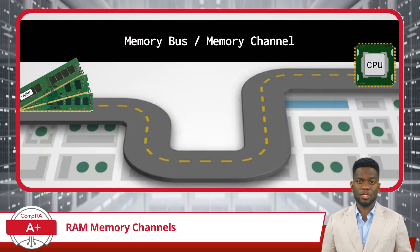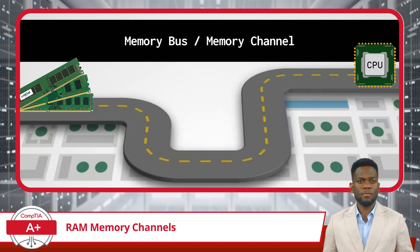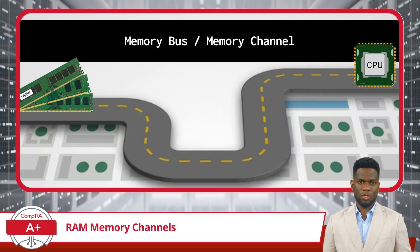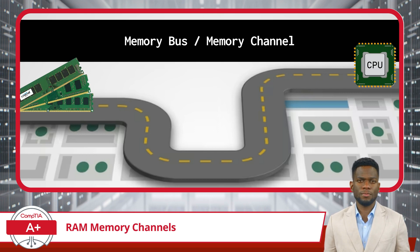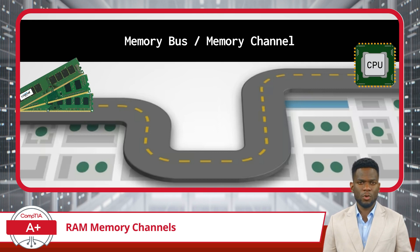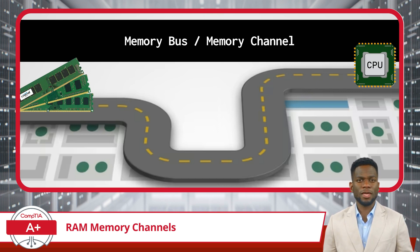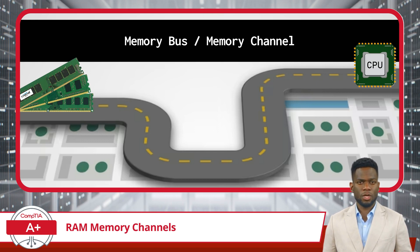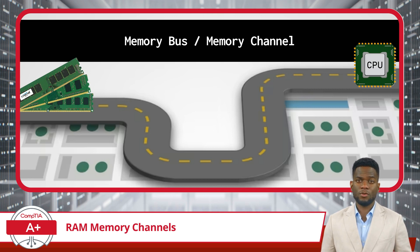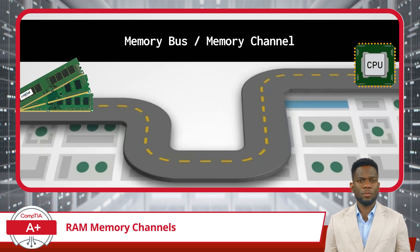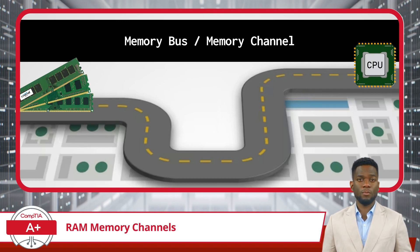Next, let's discuss the memory bus or memory channel between the CPU and the memory slots. This pathway determines how efficiently data can be transferred between the RAM and the CPU. Imagine your computer system as a bustling city, with the CPU acting as the central command center and the RAM as a storage facility. The memory bus or channel can be likened to a highway that connects and facilitates the smooth flow of traffic, or data, between the RAM and CPU. This pathway is absolutely crucial because it determines how efficiently data can be transferred between the RAM and the CPU, which are the two most vital components of your computer system.